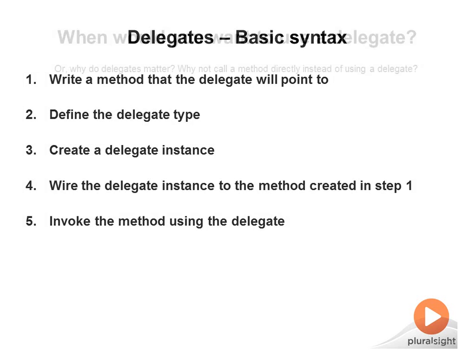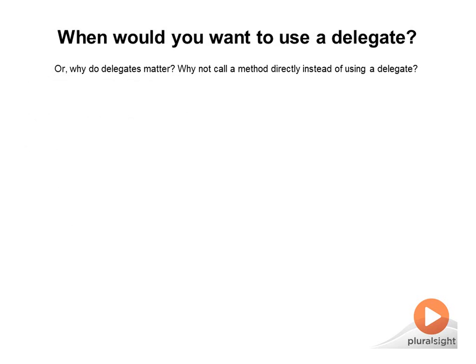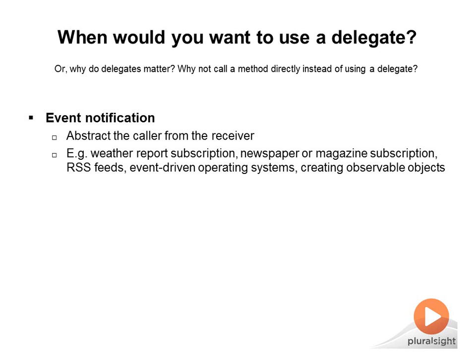You'll want to use delegates in at least two situations. First, if you're building a program where one or more components want to perform an action when another component undergoes a change in its state. For example, you want one or more mobile subscribers to receive weather updates when the temperature in their city changes. In this case, people who want to receive updates are called subscribers, and the mobile company that publishes updates is called the publisher. The change in temperature is called the event.